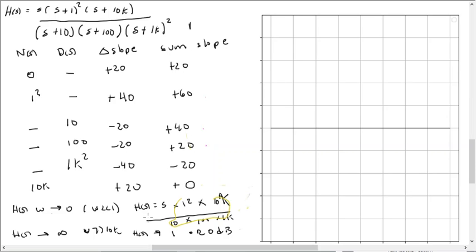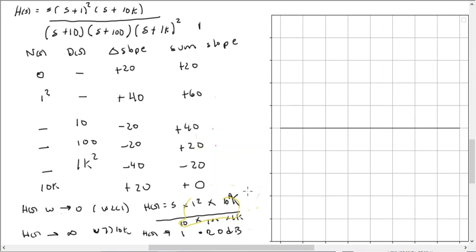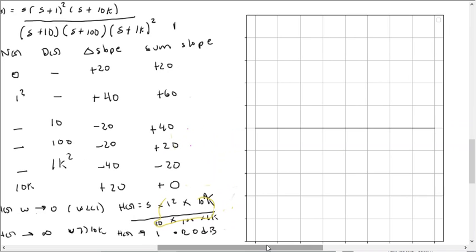And so if we look at the transfer function and let S go towards zero or just a lot less than one, we see all the S's fall out except for this one. We have S times some constant, and that's just a line upwards with a 20 dB per decade slope. So that's where it starts.